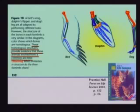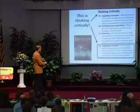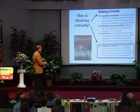These homologous structures provide evidence that these animals evolved from a common ancestor. Think critically: a seal's flipper and human arm have different functions. What evidence might help show that both structures evolved from a forelimb of a common ancestor?